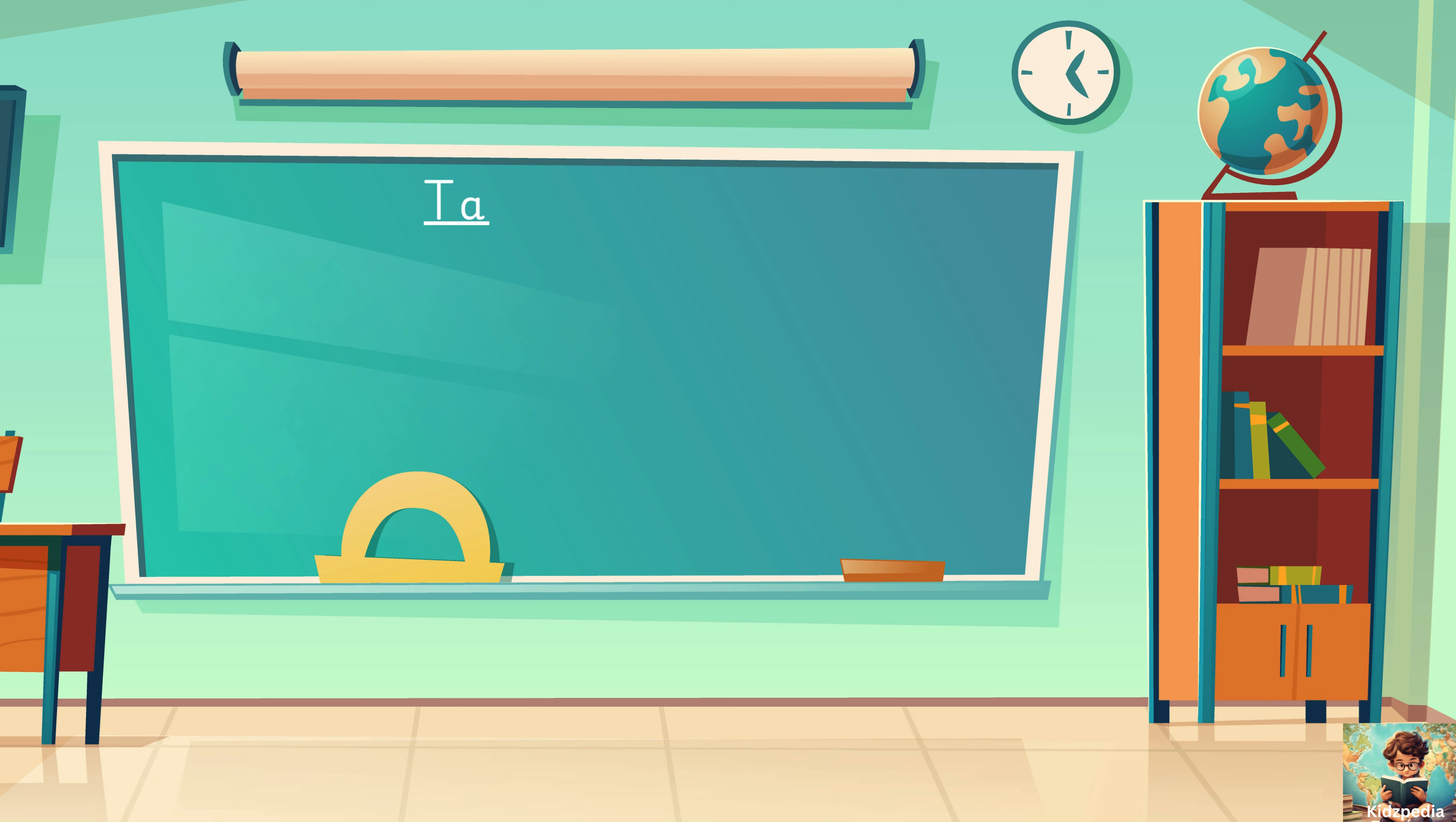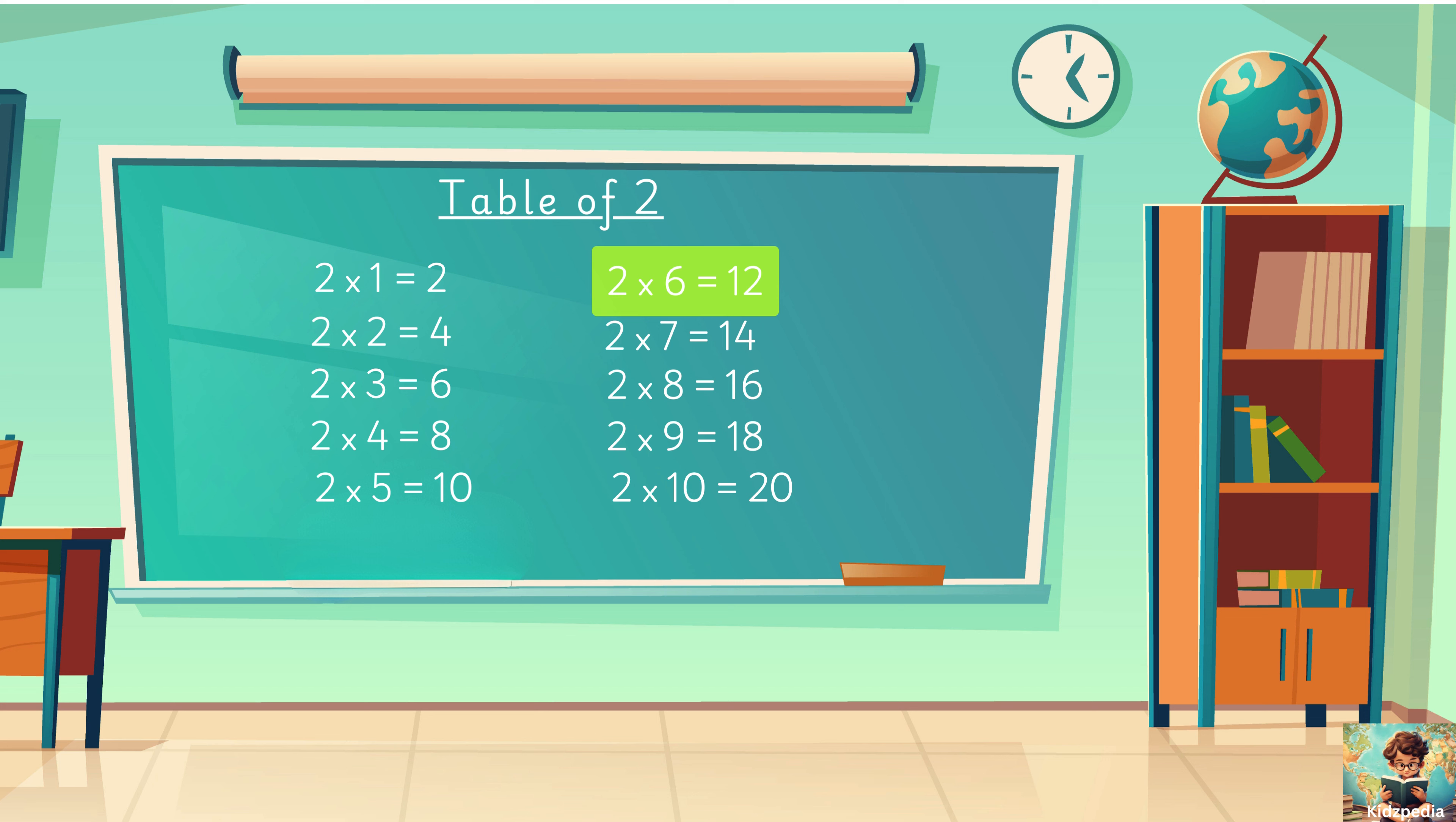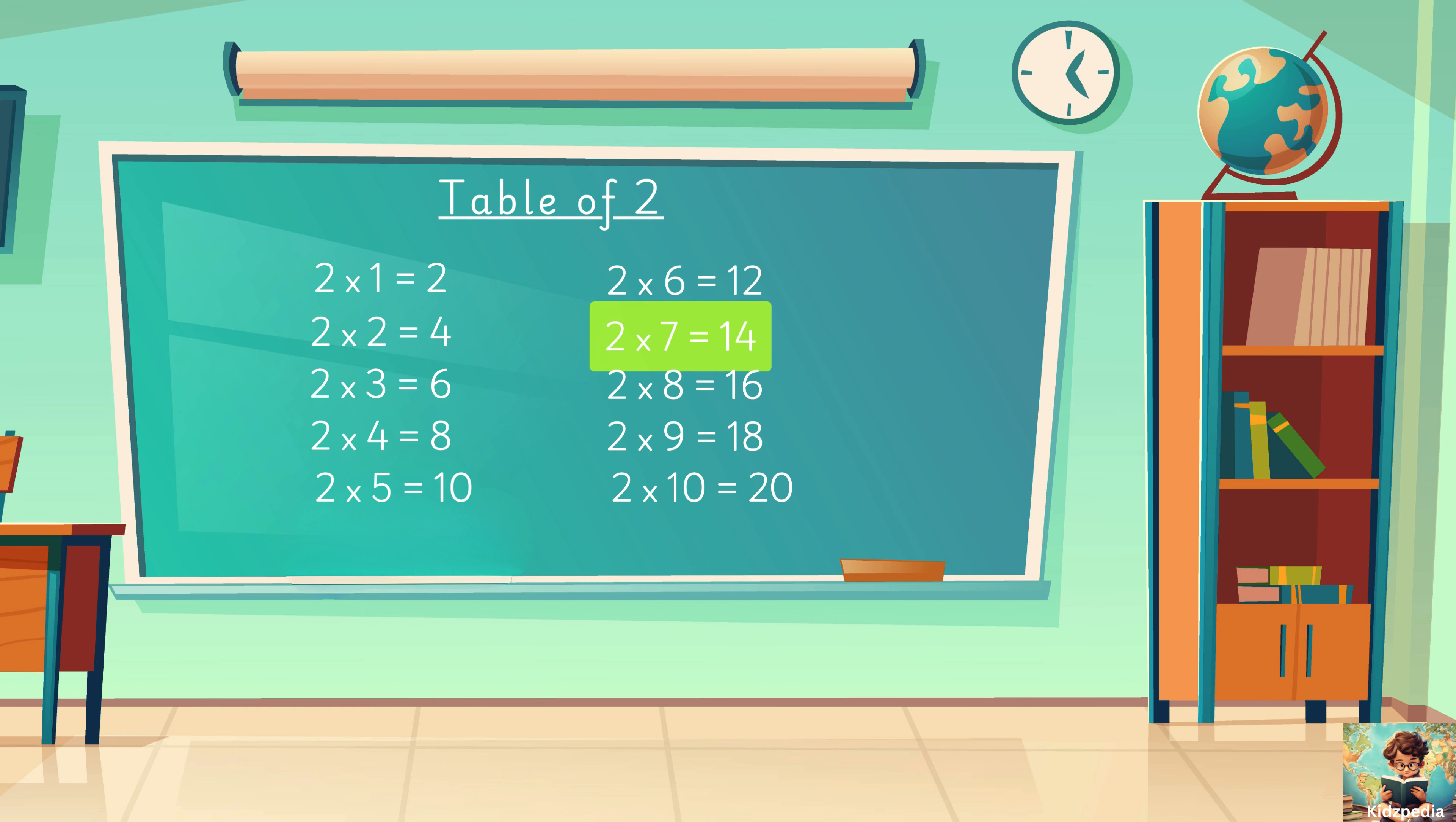Let's learn it one more time. Two nines are eighteen, two tens are twenty.